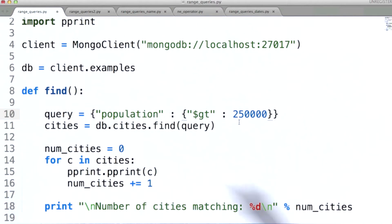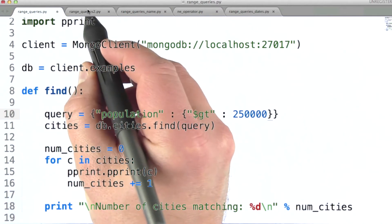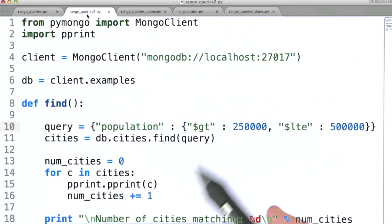We can specify a more constrained range for a query like this using an additional operator. This example is very similar to what we just looked at. The only difference being that in the value for population in our query document, we're specifying an additional operator of less than or equal to 500,000, thus defining a more constrained range for this query.